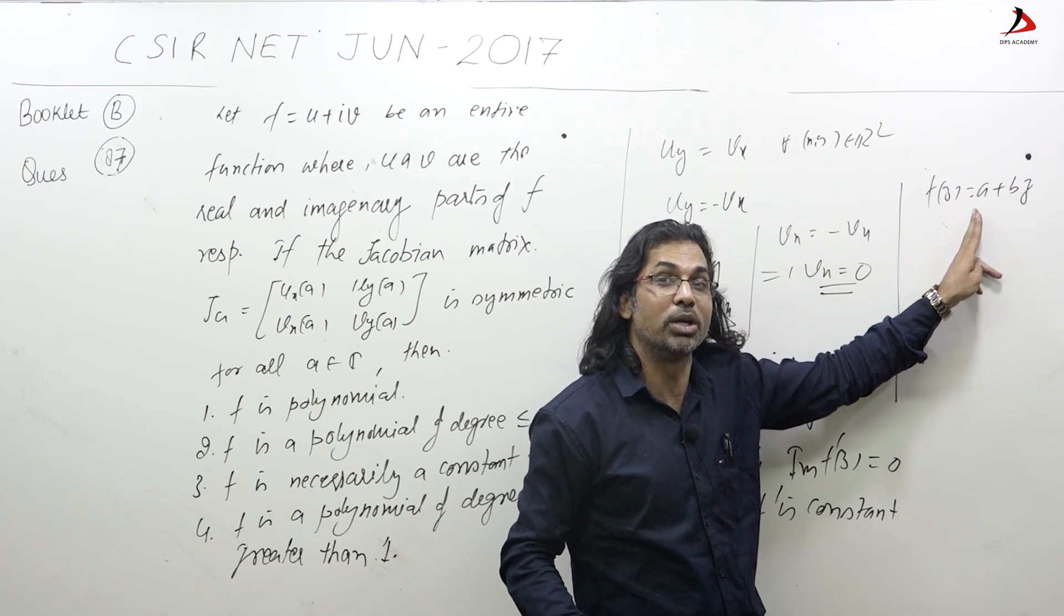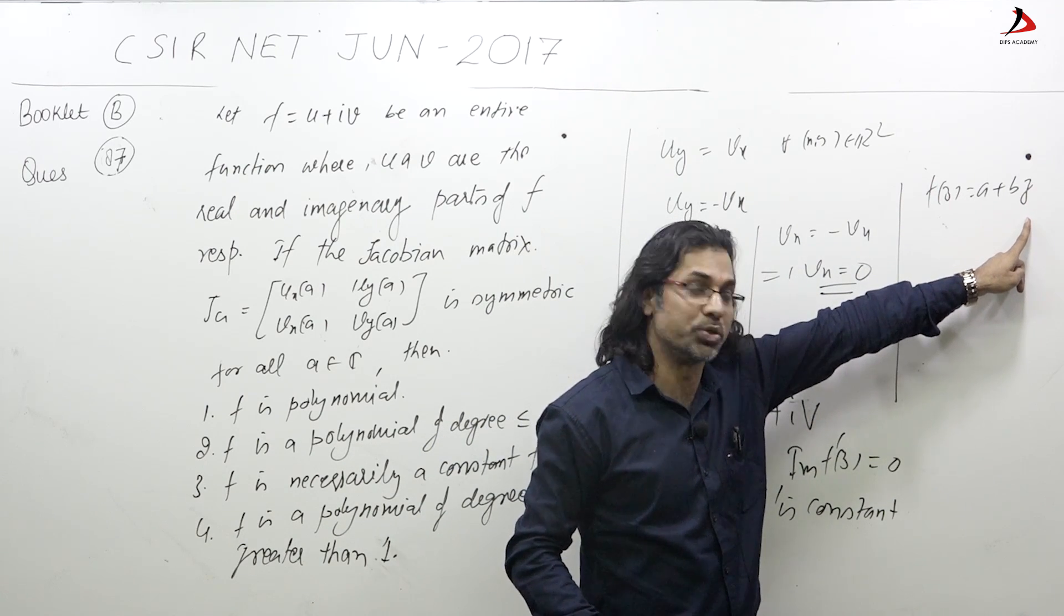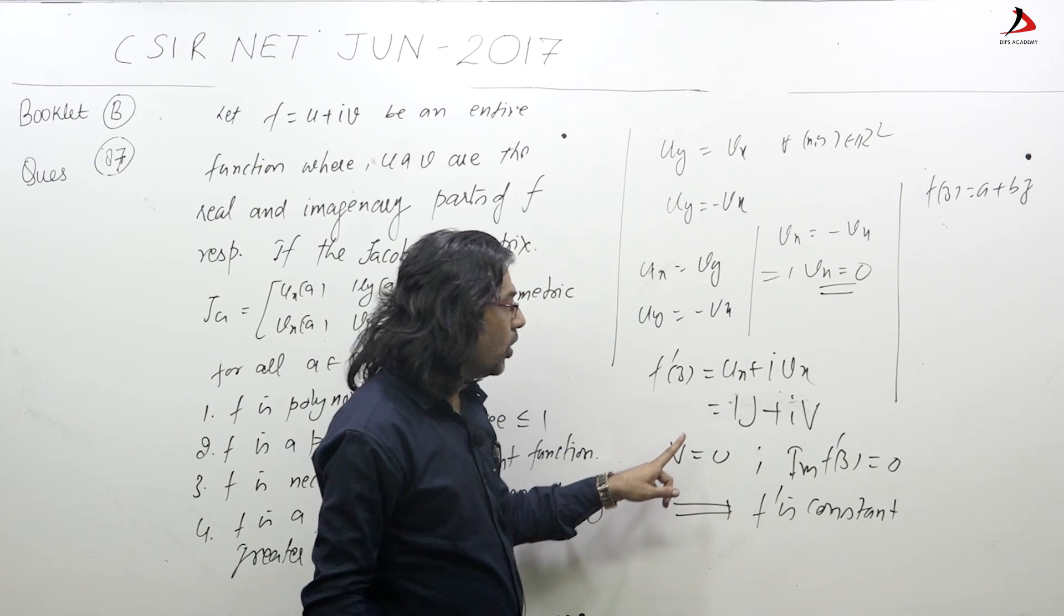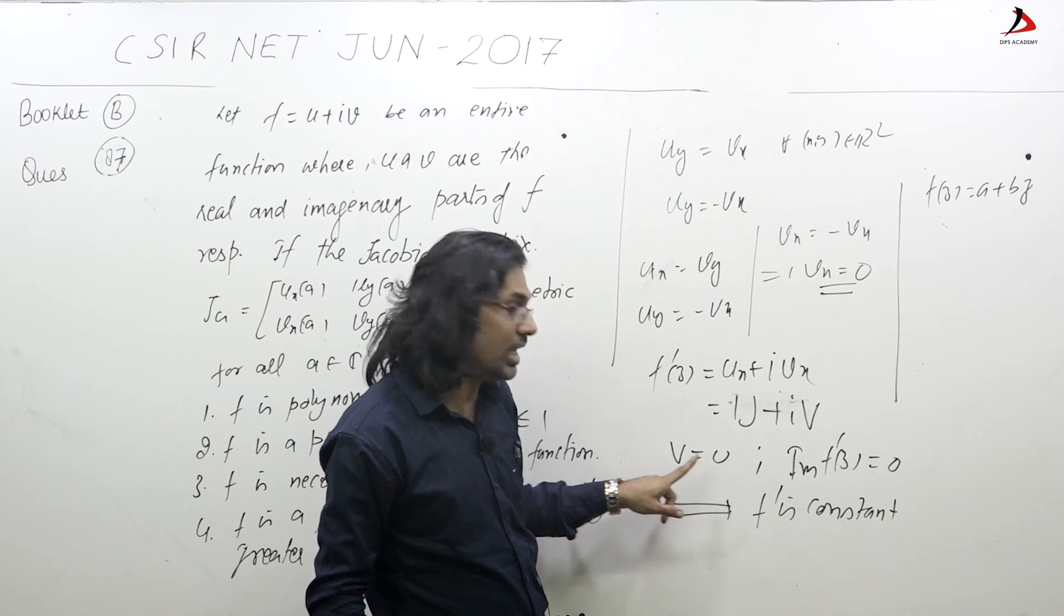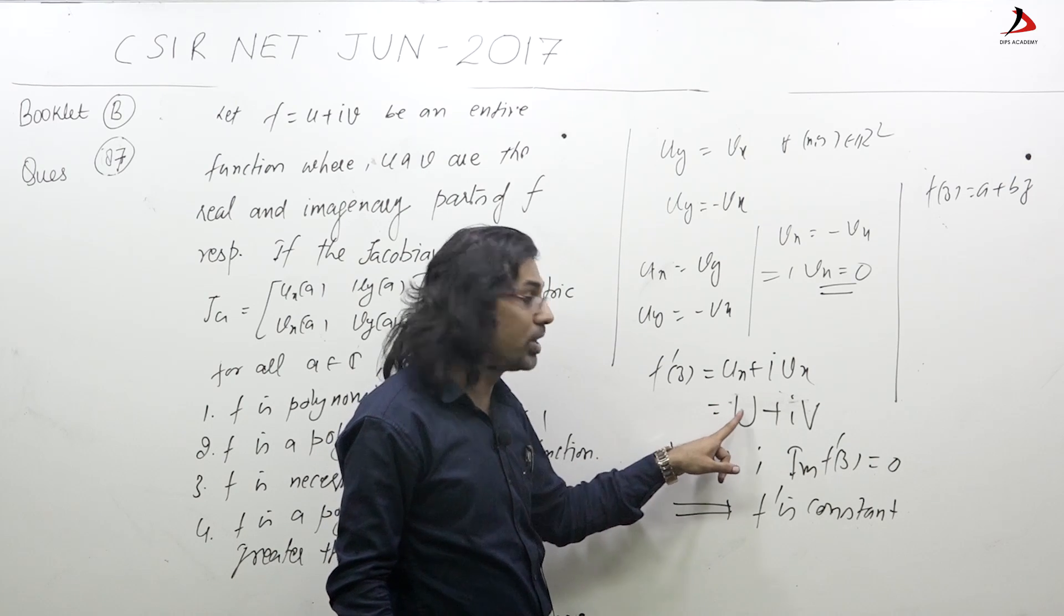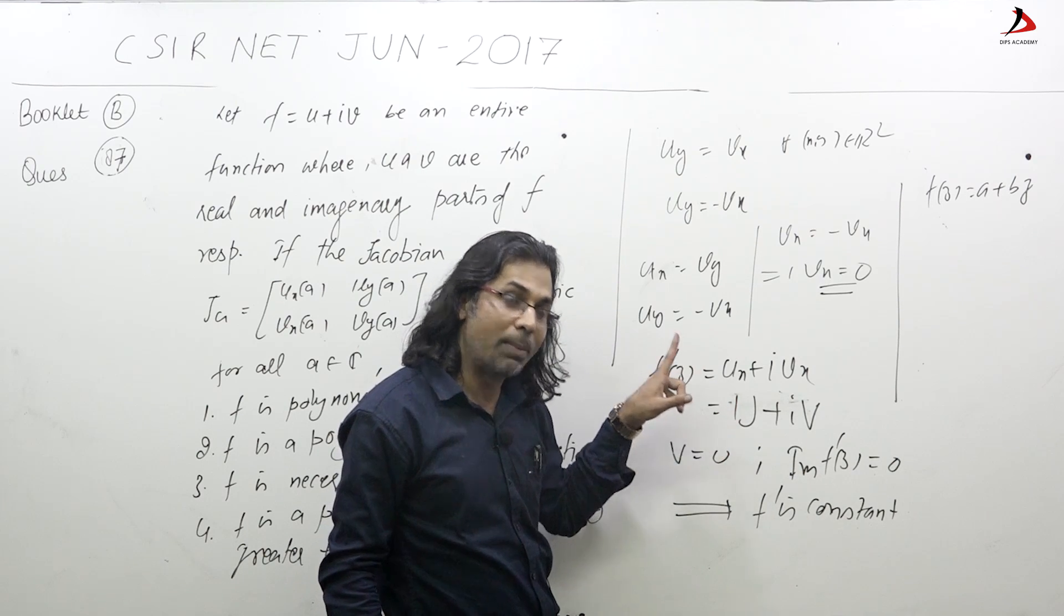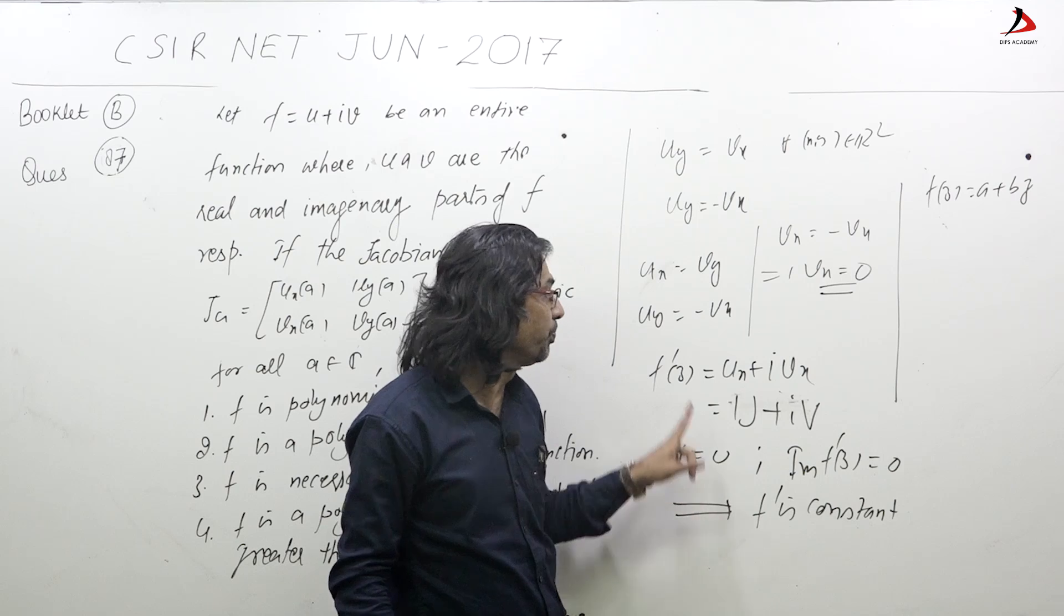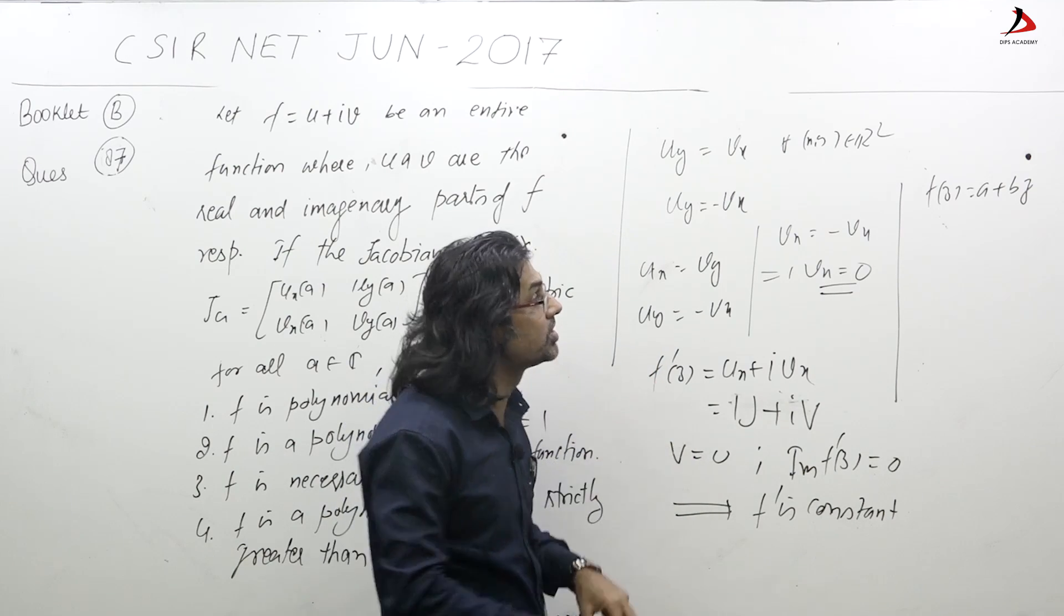You can easily verify when v_x = 0, that means v_x = 0, v_y = 0, so u_x = 0, u_y = 0, so u is constant. If v is constant, if v is 0, and hence f'(z) is constant.